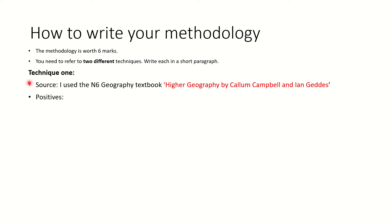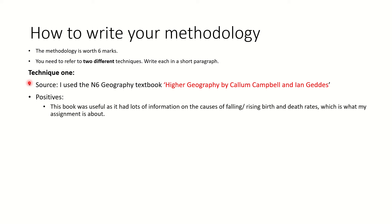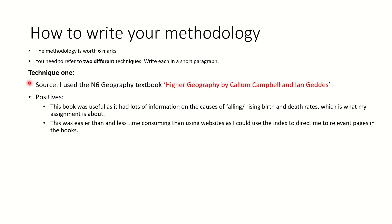Next, you want to point out some of the positive things about that source. If it was a book, it will have lots of relevant information. A book is targeted and can give you lots of relevant information. You could use an index in a book to target your research to specific pages, and that's easier and less time-consuming than trawling through lots of websites.